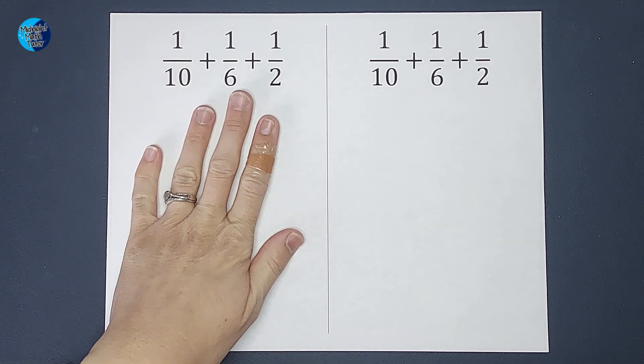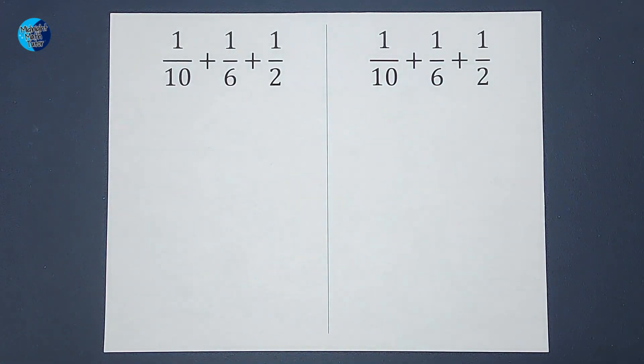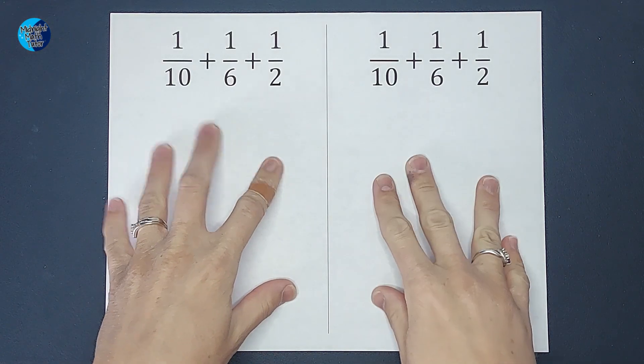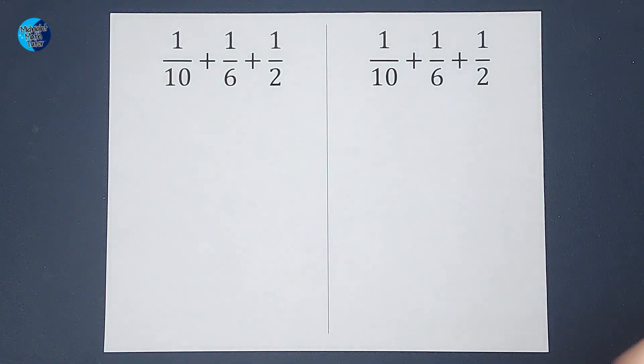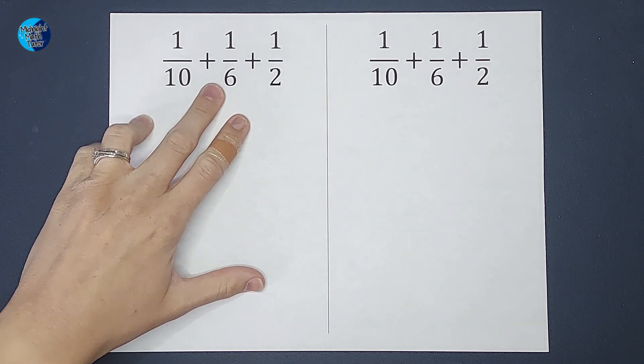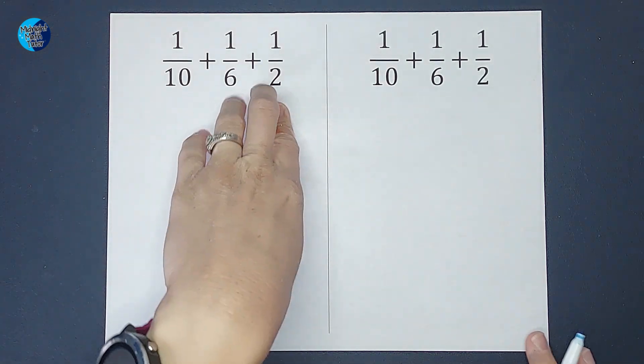Hey, you guys, we're going to add three fractions together. It's probably your favorite thing to do. And we're going to actually show you two different ways you could go about doing it. So this first one, we are adding one-tenth plus one-sixth plus one-half.